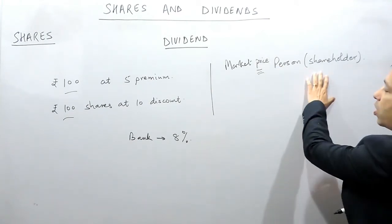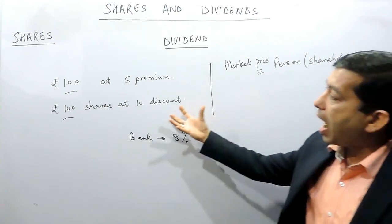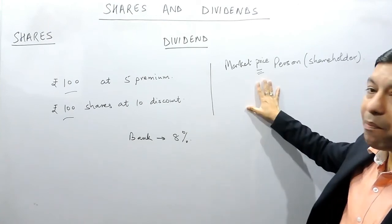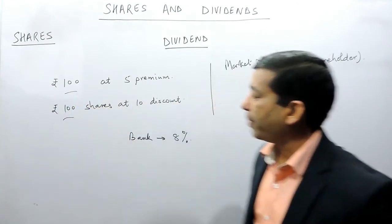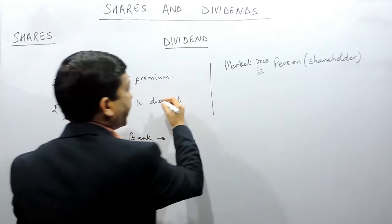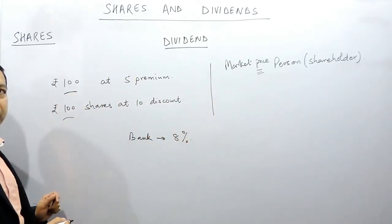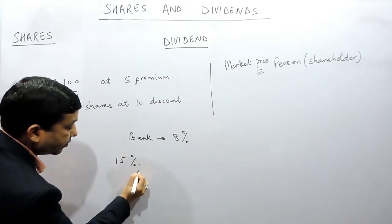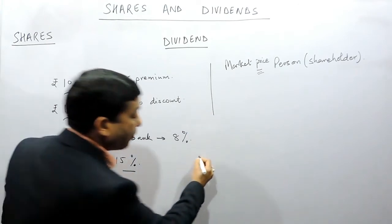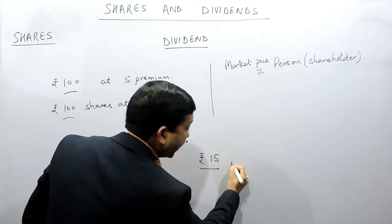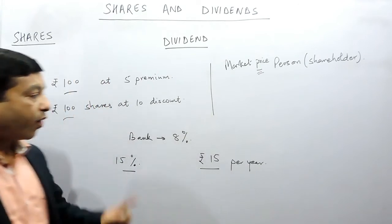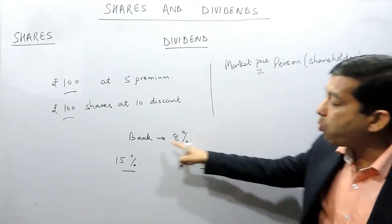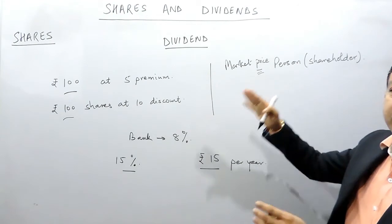When the shareholder calculates the dividend, the amount received from the company is the same, but the percentage is calculated on the market price, not on the company price. Suppose a particular company has a Rs.100 share and is paying a dividend of 15%. This means the company is paying Rs.15 per year to the shareholder for one share. Because the dividend is more than the bank rate of interest, the market price of the share will increase.